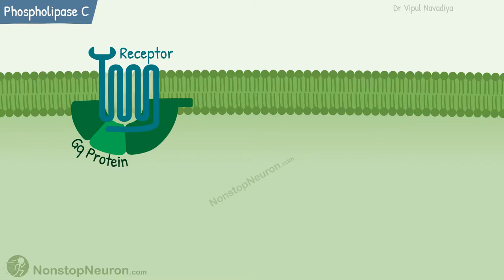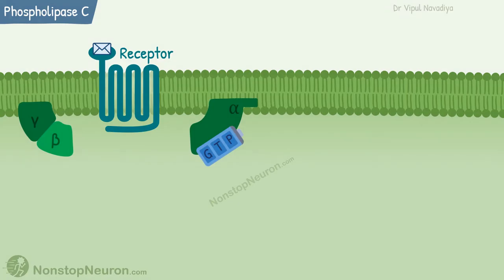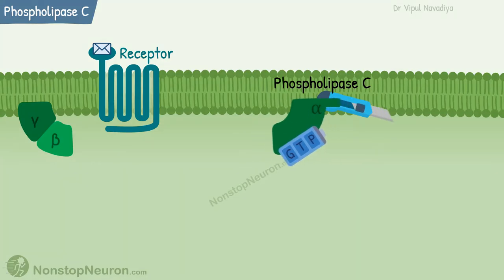Under resting state, the trimer of alpha, beta, and gamma subunit is bound to the receptor and the alpha subunit is bound to GDP. The binding of a ligand with the receptor causes conformational changes that cause release of GDP and binding of GTP. This leads to disassembly of subunits and formation of a free alpha subunit and beta-gamma complex. The alpha subunit travels along the membrane and goes to Phospholipase C, a membrane-bound enzyme, and activates it.